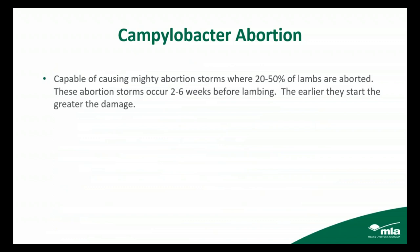Let's move on to Campylobacter abortion. Tasmania has been the home of enormous abortion storms where you can literally lose 20 to 50% of lambs. We haven't had many in the 40–50% range for quite some years, but with confinement feeding in the last two or three years we've certainly seen quite a number of cases with up to 20% loss, and even more cases with between 5 and 20% frank abortions.